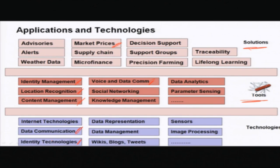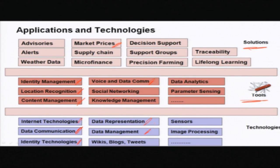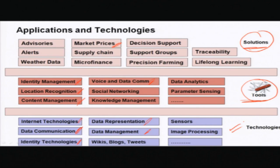For example, location recognition probably happens using data communication technologies, internet technologies, and identity technologies. Similarly, content management happens using data representation and data management. So a solution is built out of multiple tools and each tool is handled through multiple technologies.